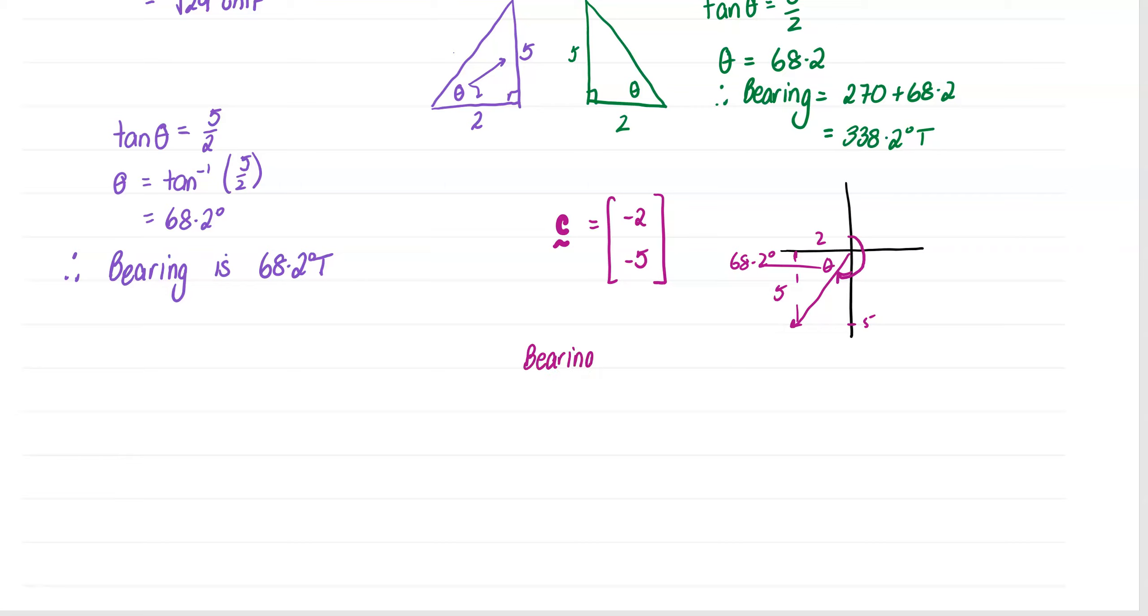So my bearing using trigonometry. The bearing this time will be, instead of 270 plus the theta like we did before, this will now be 270, because 270 goes all the way around there but I don't want that. I just want up to my angle. I want that bit there. So we're going to say 270 take the 68.2 degrees which gives me 201.8 degrees true as my bearing.